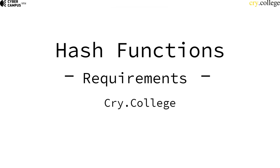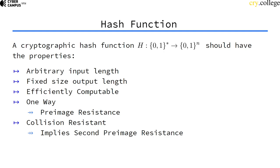What are the requirements for a good hash function? A cryptographic hash function takes an arbitrary input and outputs a fixed-length output value. It should be efficiently computable, it should have a non-correlation property, it should be one-way, meaning that it's pre-image resistant, and should be collision resistant, which also implies it's second pre-image resistant.